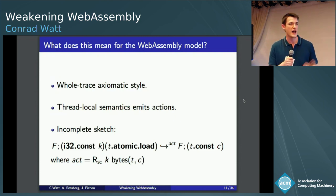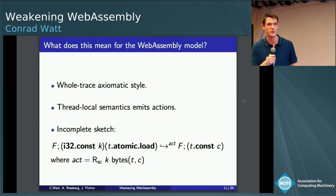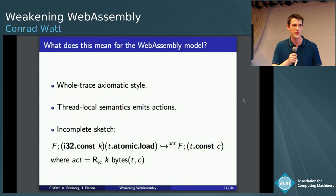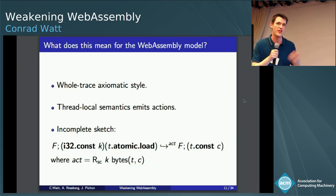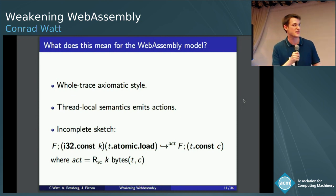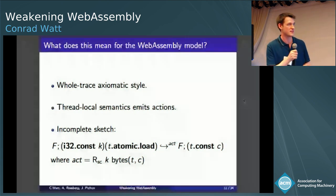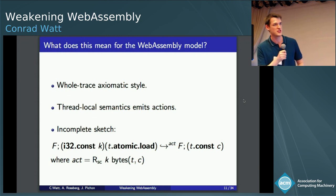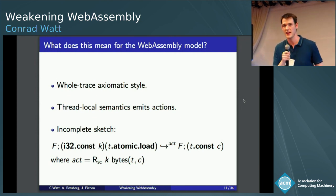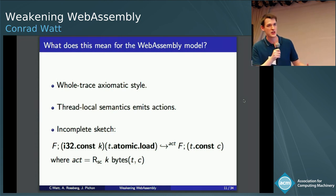So as I said, the model at its core has some lineage from the C11 model, which means it's in this whole-trace axiomatic style. So what you do first is you take your thread-local semantics and you annotate them with actions explaining what's happening to the memory. And then you have to collect all of those actions into a trace and then the memory model will say whether the whole trace is allowed or not allowed. So just as a sketch of what it looks like to annotate our local reduction rules, here I have an atomic load and you can see instead of going into memory and actually operationally pulling out the bits, you just emit this action.